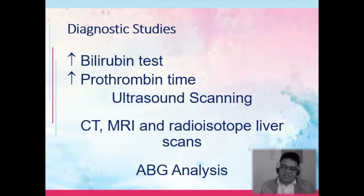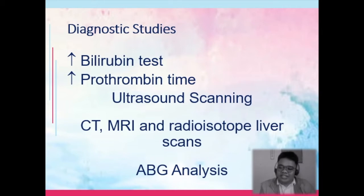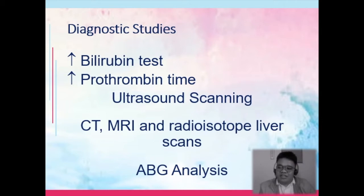Ultrasound scanning is done because if your patient has a liver problem, the first imaging study usually done is ultrasound. Then CT/MRI and radioisotope liver scans provide more detailed images. CT and MRI give detailed images of the liver, while radioisotope liver scans detect metabolic activity in the liver.